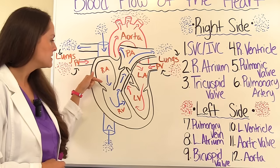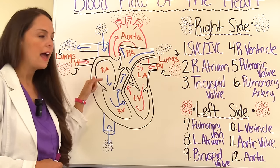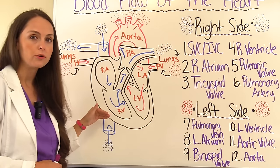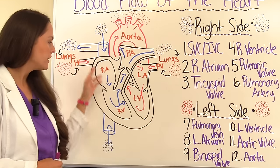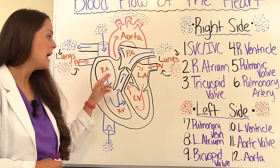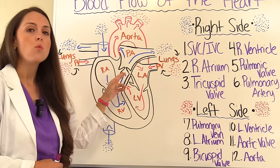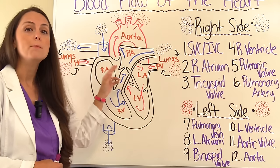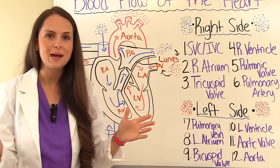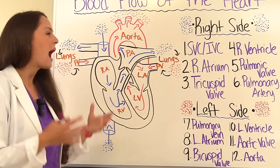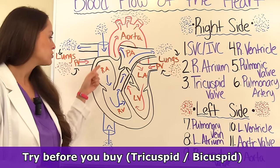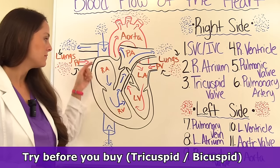Then it flows down through a valve — there are valves that separate your atria from your ventricles. On the right side we have the tricuspid valve, and on the left side we have the bicuspid valve, also called the mitral valve. How can you keep the two separated? I like to remember the saying: try before you buy — tricuspid valve, bicuspid valve.